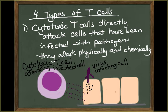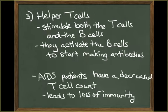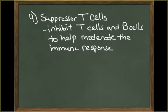Cytotoxic T cells are responsible for cell-mediated immunity. They will directly attack cells infected with pathogens, both chemically and physically. Memory T cells have already been exposed to an antigen in the past; they clone themselves to produce identical lymphocytes that can attack pathogens containing the abnormal antigens. Helper T cells can stimulate both T cells and B cells, and they must activate B cells before the B cells can start producing antibodies. In persons with AIDS, the helper T cell count is greatly decreased, which is mostly responsible for the loss of immunity in AIDS patients. Suppressor T cells inhibit T cells and B cells to help moderate the immune response.